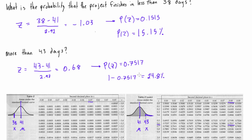It's important to note that if we wanted to know what the probability of being less than 43 days, well then it would be that 75.17% chance. Hopefully that's not confusing, I will see you in the next video.